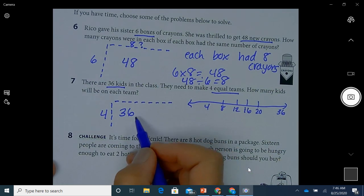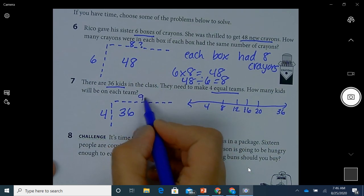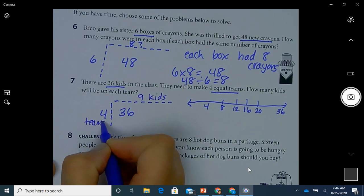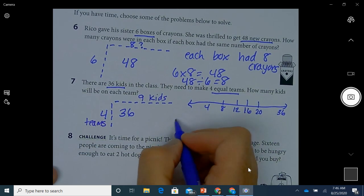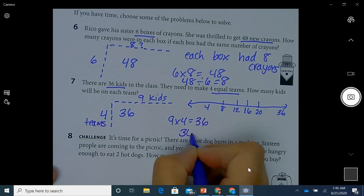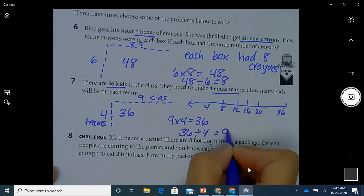And I'm realizing that it's going to be nine kids because there's four teams. And if I divide them all equally to get 36, then I have nine kids. So it's either nine times four equals 36 or 36 divided by four equals nine.